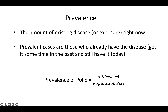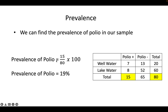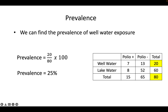Prevalence is the number diseased over the population size. We had 15 people that were polio positive in a population of 80, so the prevalence of polio is about 19%. We can also find the prevalence of well water consumption: 20 people consumed well water out of 80, so about a quarter of our village drinks well water.